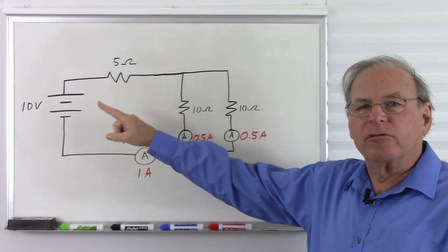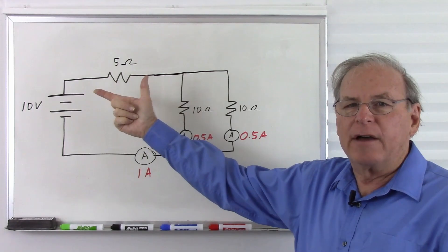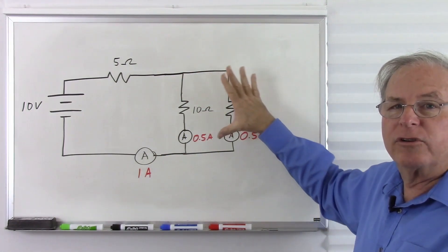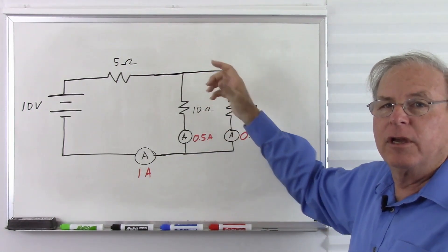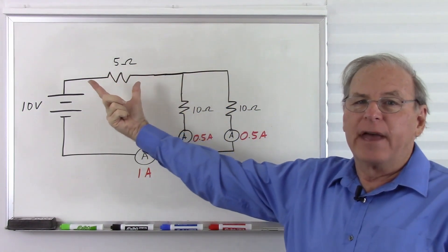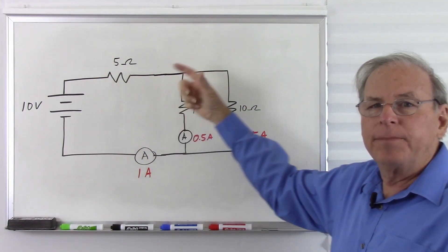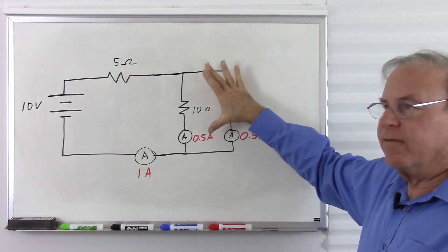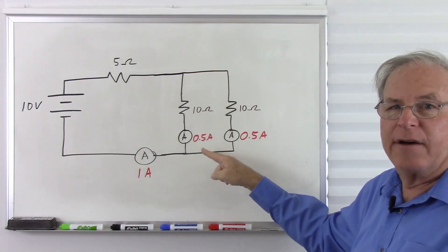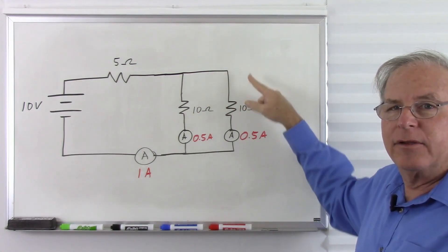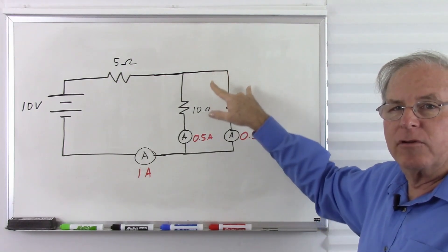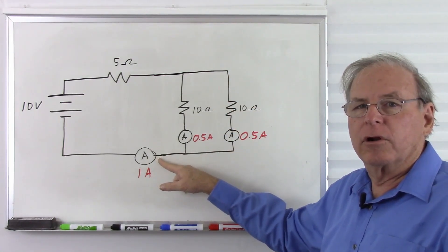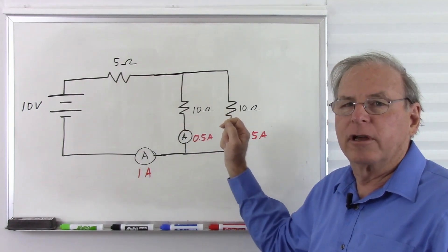Back to the original style: we have 10 volts, 5 ohms, and two 10 ohm resistors in parallel which together act as 5 ohms. So we have half our voltage — 5 volts — across each section. 5 volts across 10 ohms gives us half an amp through each parallel resistor. So we have a total of 1 amp of current circulating through the circuit.